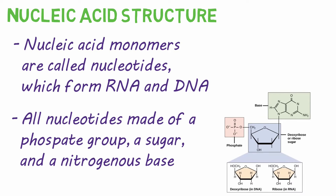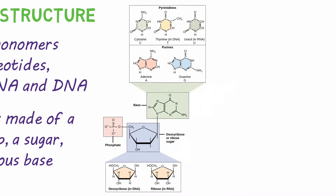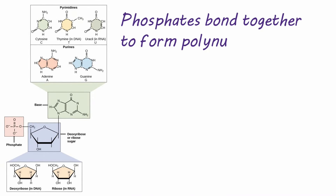In RNA, the sugar is ribose, and in DNA, the sugar is also a ribose but with one less oxygen — hence RNA is ribonucleic acid and DNA is deoxyribonucleic acid, because the ribose has been deoxygenated. The nitrogenous bases in DNA are guanine, adenine, cytosine, and thymine. RNA also has guanine, adenine, and cytosine, but instead of thymine, RNA contains uracil. The phosphate groups of nucleic acids bond together to form long polynucleotide chains, like RNA and DNA.